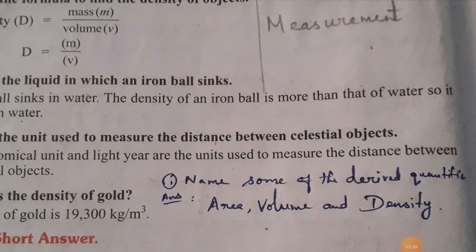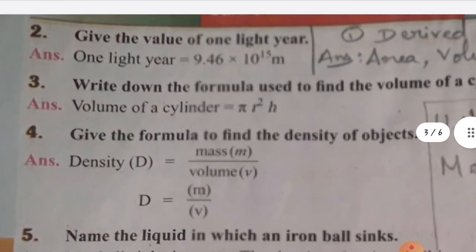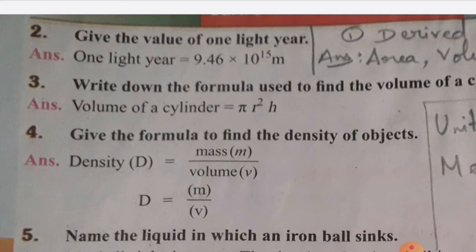Now see the short answer questions. First: name some derived quantities. Derived quantities are area, volume, and density. Second: give the value of one light year. One light year is equal to 9.46 × 10 power 15 meters — this is a very important question.